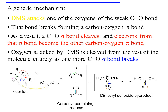Finally, the oxygen that was originally attacked by dimethyl sulfide is cleaved from the rest of the molecule entirely as one more carbon-oxygen sigma bond cleaves, and those electrons are pushed onto oxygen as a lone pair. This results in the formation of two carbonyl-containing products, which are the principal organic products of the reaction. Note that dimethyl sulfoxide is a byproduct of this transformation, and its two resonance forms are shown here.